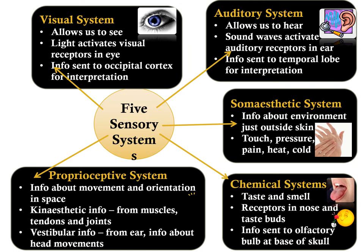There are five sensory systems that provide us with information necessary for survival and adaptation. The first is the visual system, which allows us to see. Light activates the visual receptors in the eye, where it is converted into nerve impulses that send information to the brain for interpretation in the occipital cortex.